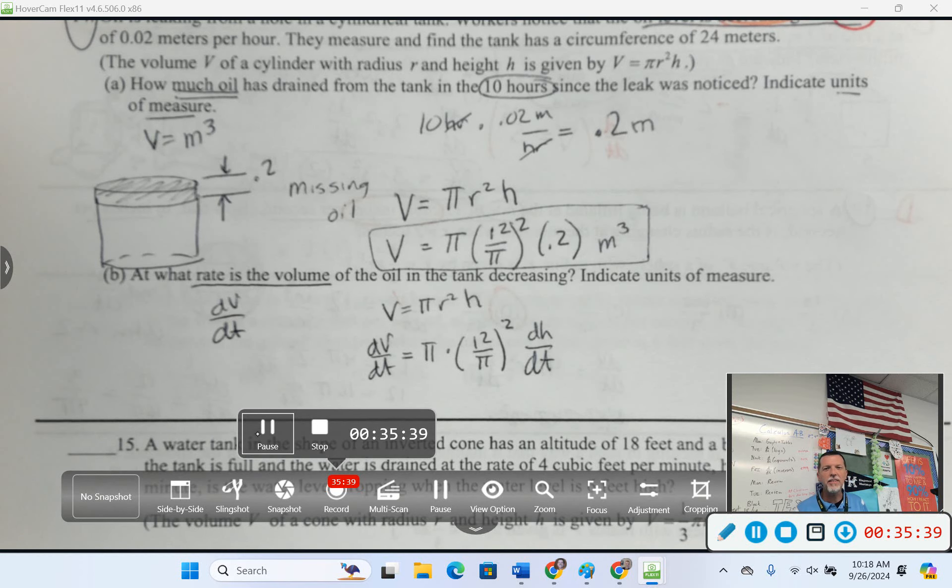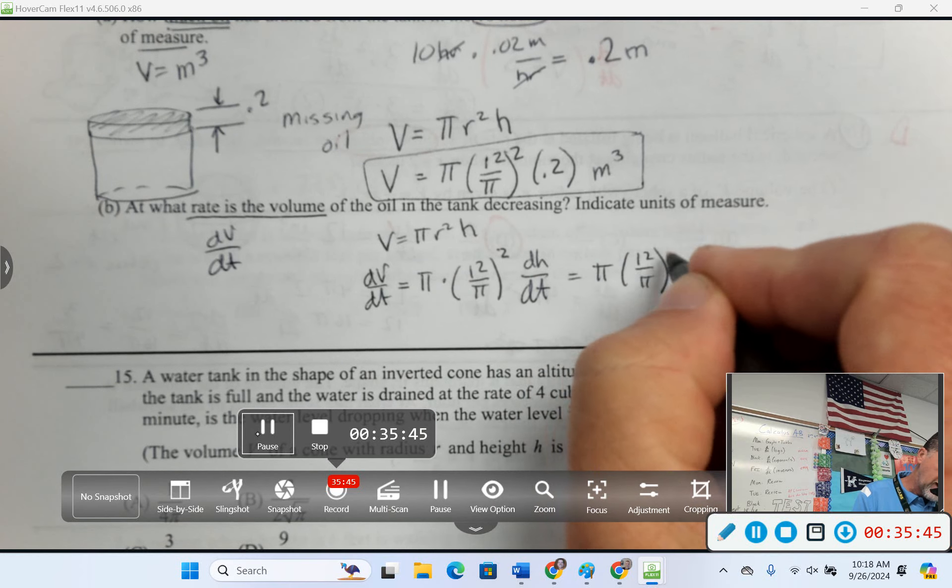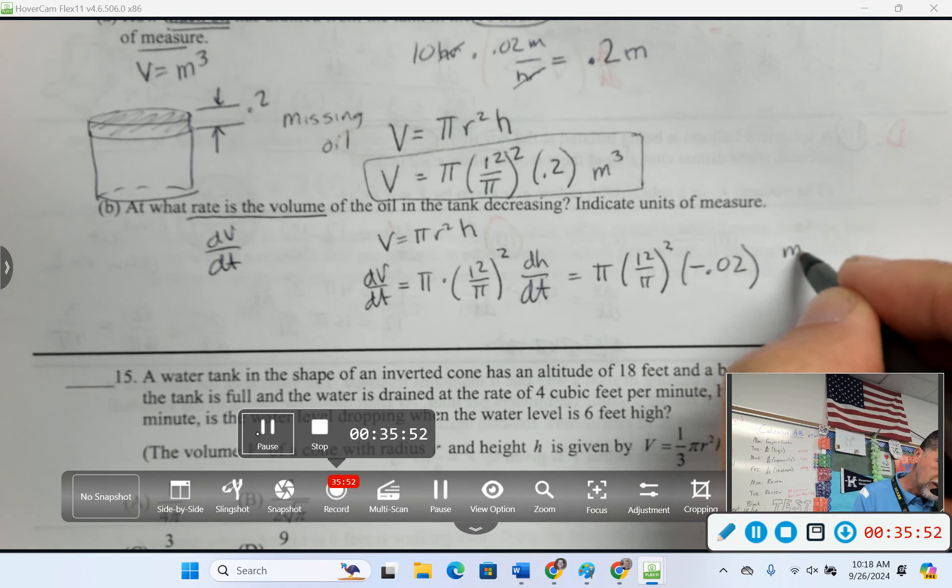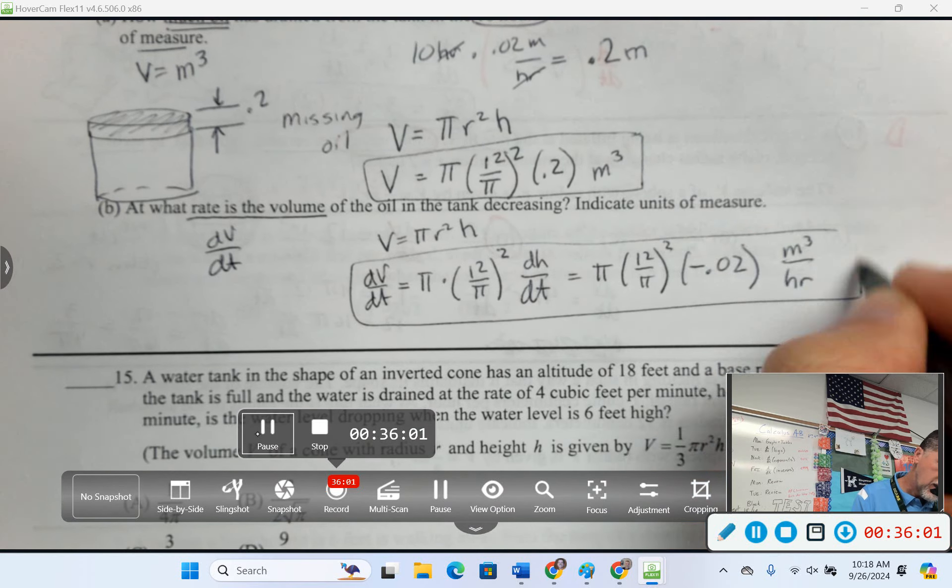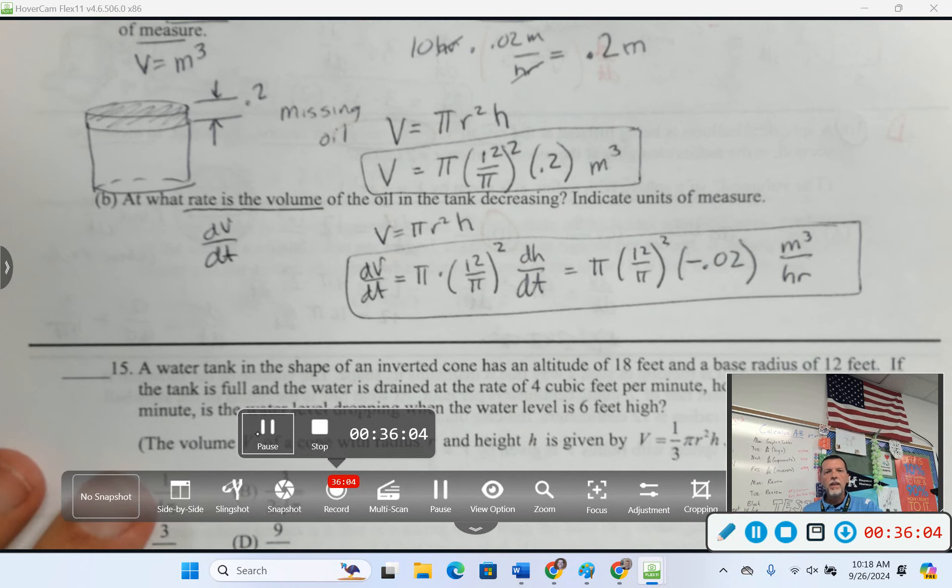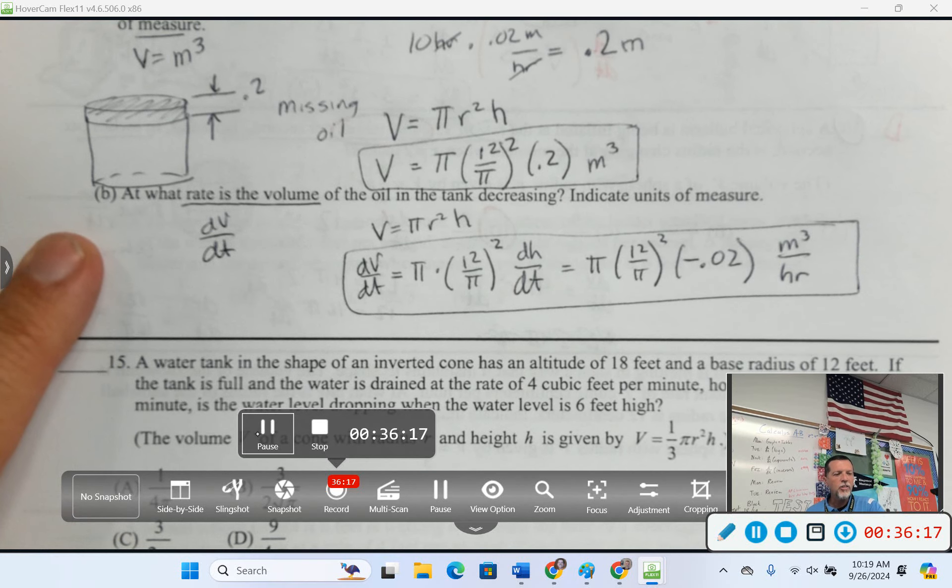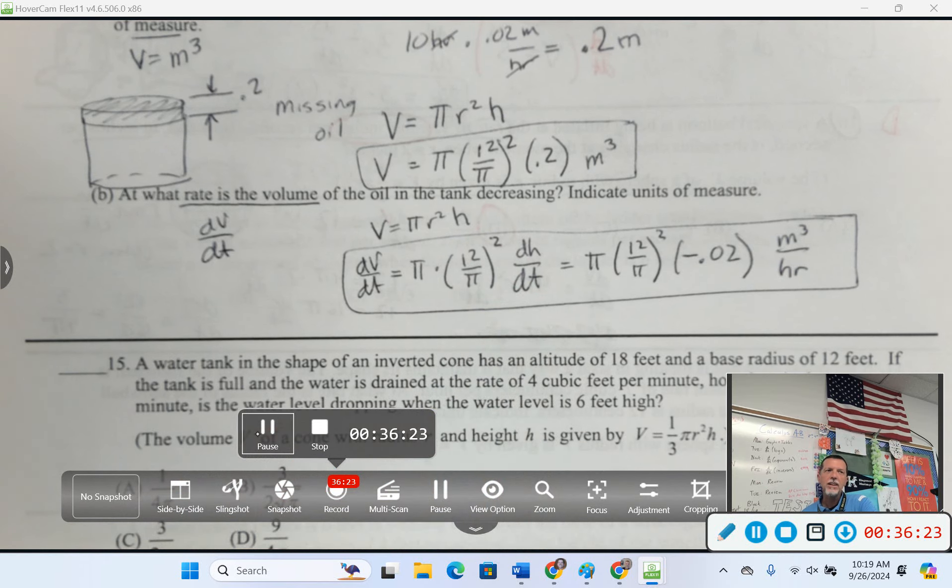The h is changing. The h is the only variable. And then I'm basically there. I just plug in the pieces here. π, 12 over π squared, dh/dt was negative 0.02. And then meter cubed per whatever our time was here. Hour. Got to be careful. Not all letters are variables. We use those interchangeably, but we should be careful about that. In this problem, r isn't changing. It's not varying. It's a constant. So we only have to account for the dh/dt in what's changing.